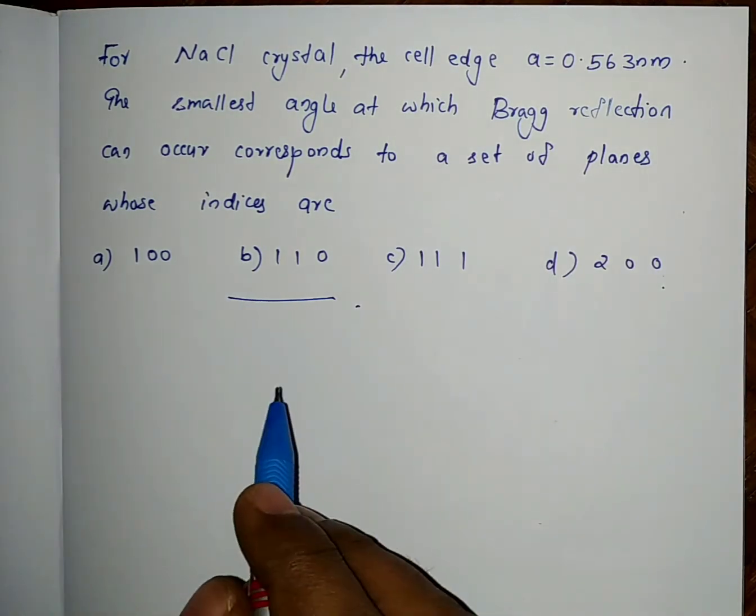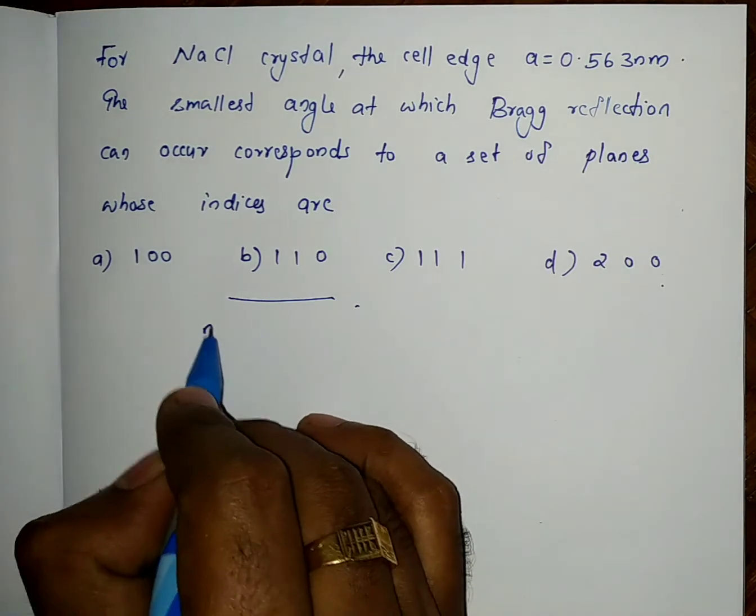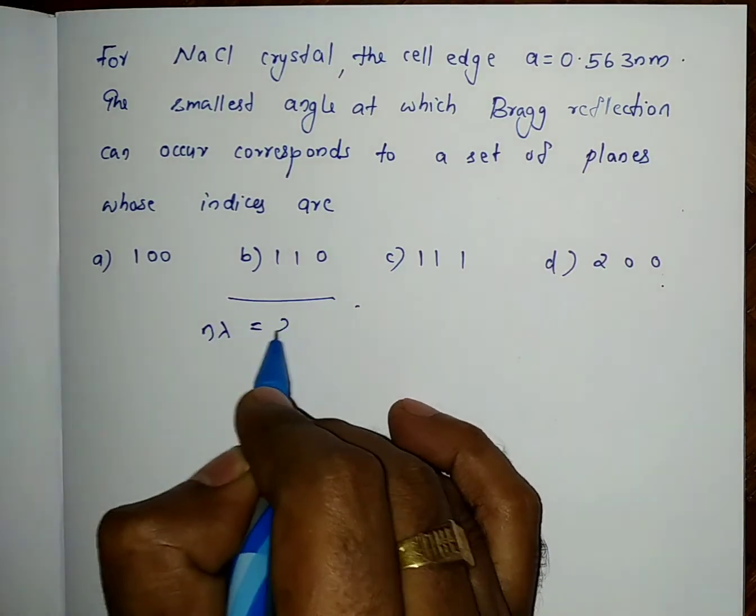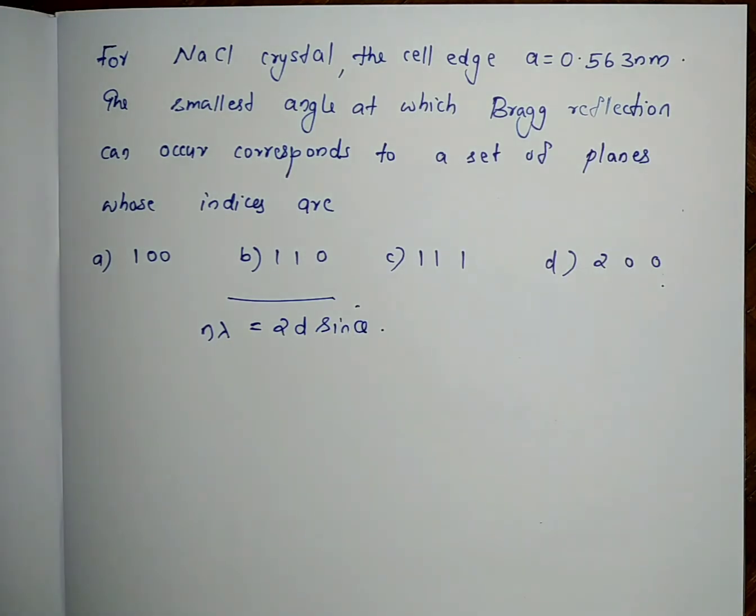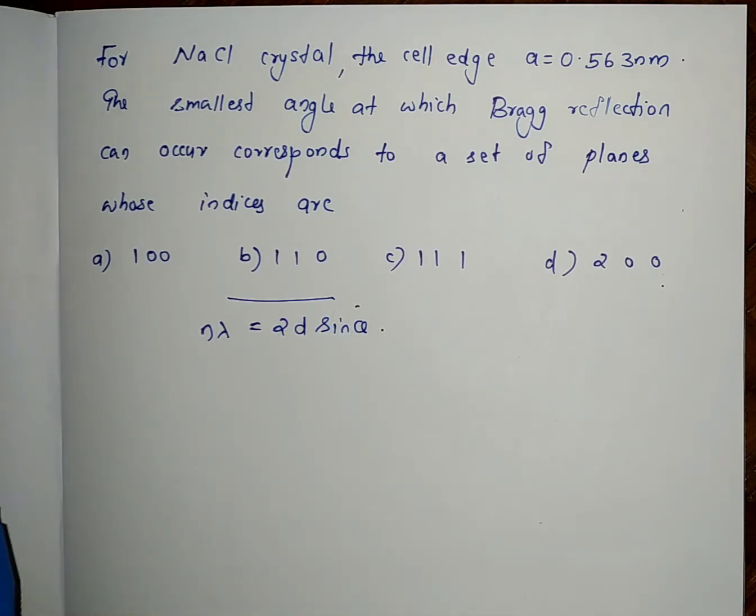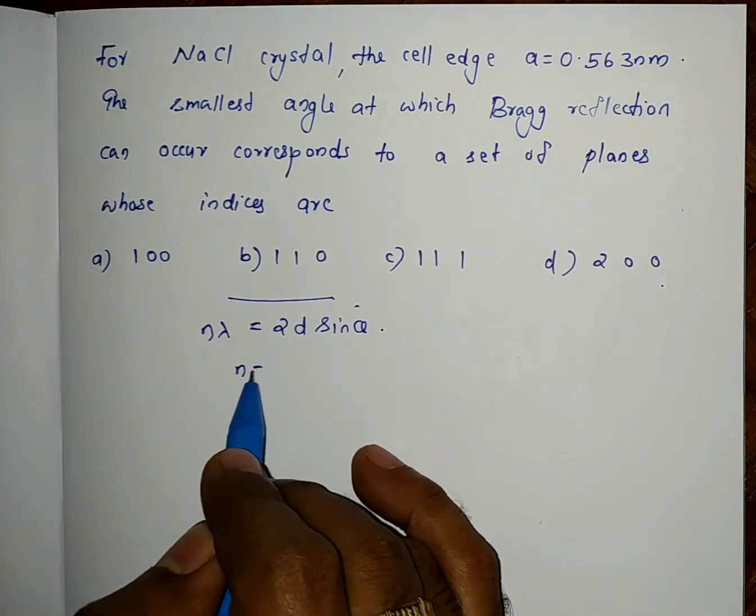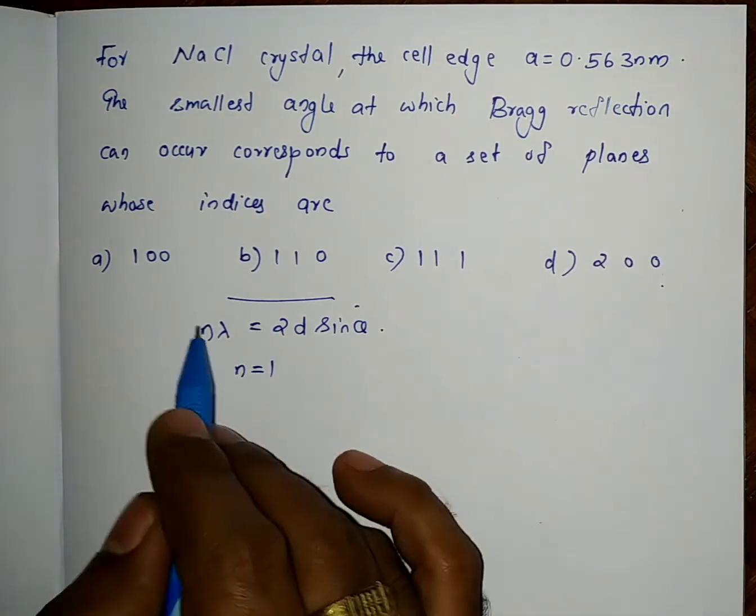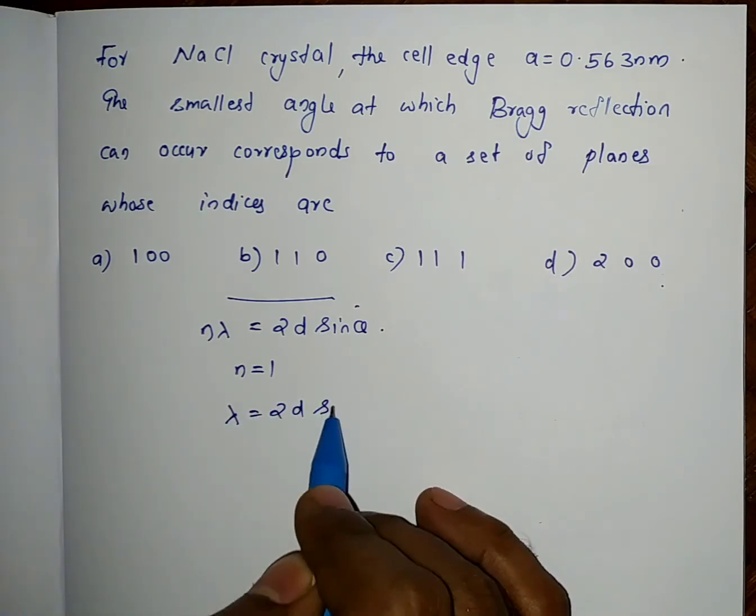We start with Bragg's law. Bragg's law is nλ equals 2d sin θ. This is the basic diffraction equation. For first order diffraction, n equals 1, so λ equals 2d sin θ.